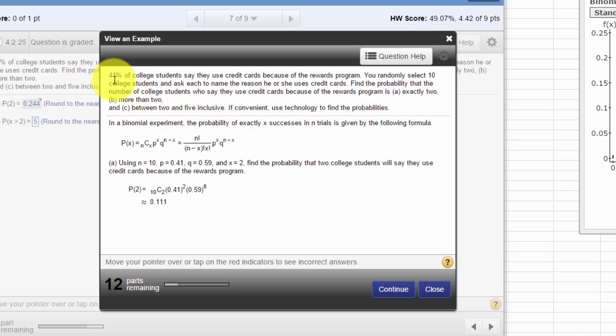You select 10 randomly and ask them to name the reason they use credit cards. Find the probability that the number who say they use credit cards because of the rewards program is exactly two, more than two, and between two and five inclusive.